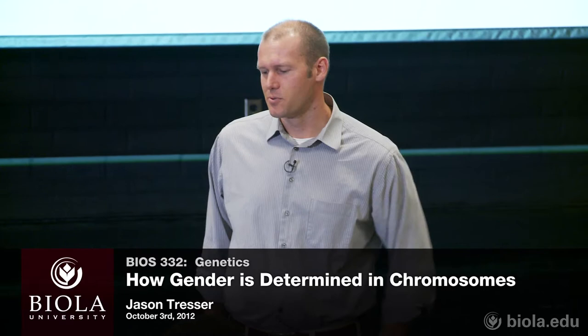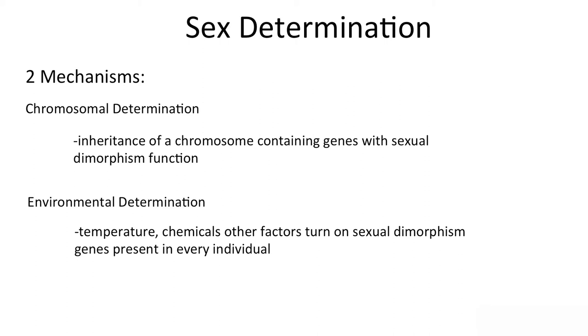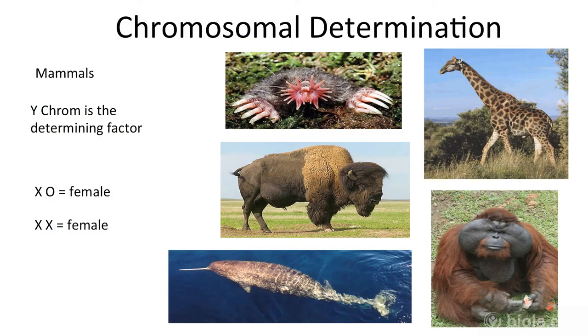We left off last time talking about sex determination. Whether you're becoming male or female has a lot of downstream effects. We're going to talk about the fundamental thing that turns on either male or female development, but there are ways to change male and female development even after sex determination has happened. There are two main categories of mechanisms: either you inherit a chromosome containing genes that turn on the male or female pathway, or some environmental effect like temperature, chemical, or timing determines sex.